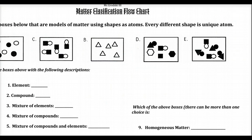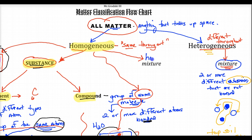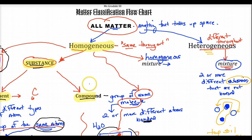One last piece: something that's homogeneous but not a substance is a homogeneous mixture. A heterogeneous mixture is two or more substances in close proximity that are not equally mixed. A homogeneous mixture is two or more different atoms or compounds evenly mixed — an even mixing is called a solution. We write solutions with the designation 'aqueous.'